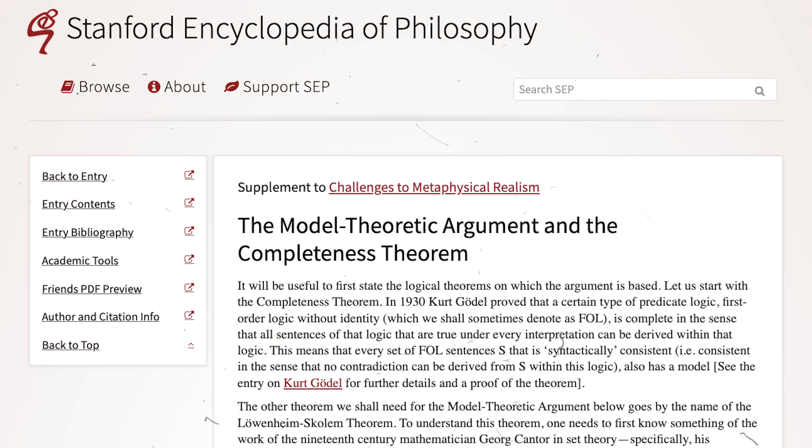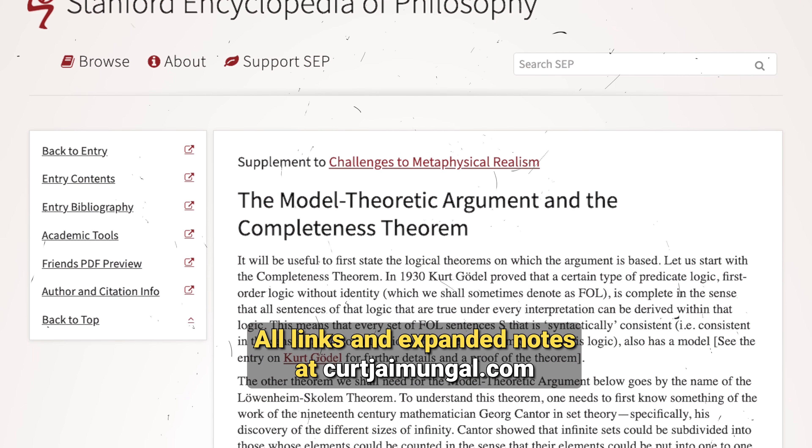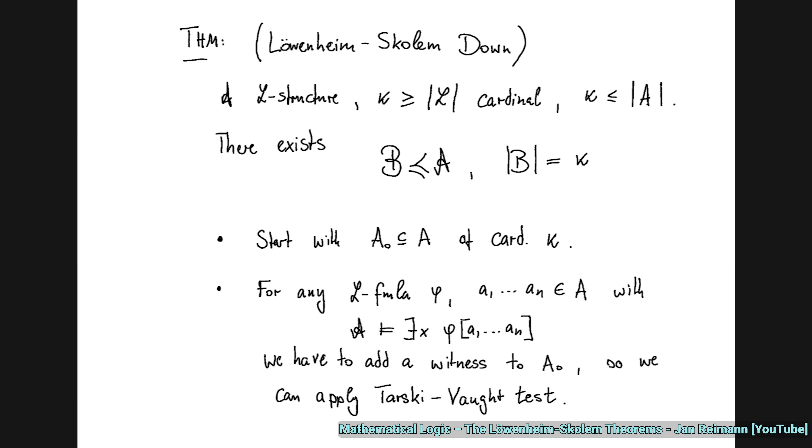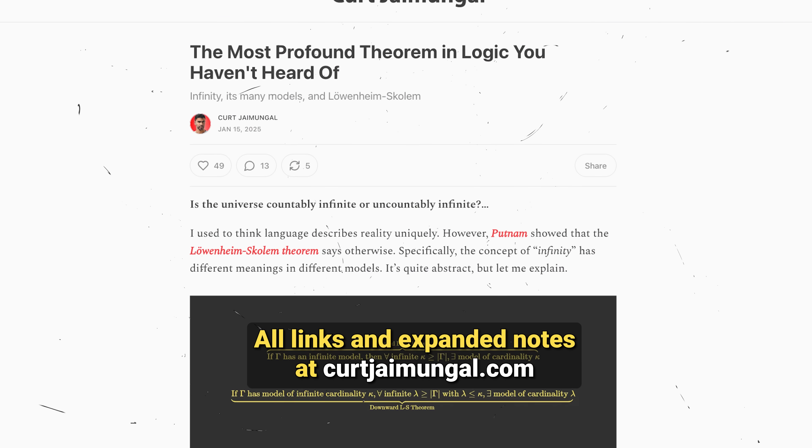Here's where philosophers earn their keep. Putnam's model-theoretic argument shows that even if physics could derive all of its laws from some fundamental principle, we couldn't know if we found the true explanation. For any theory T that explains our observations, it has multiple models — different ways of mapping the theory's terms onto reality. This is actually one of the reasons why Putnam thought the Löwenheim-Skolem theorems weren't a mere mathematical curiosity.